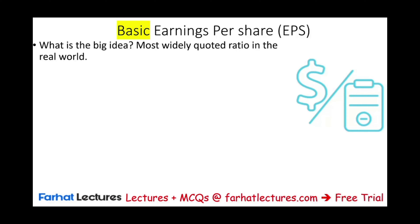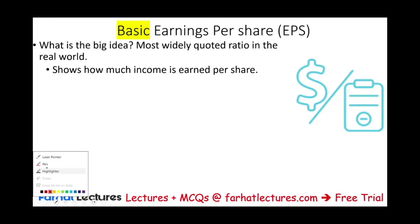If you watch CNBC, Bloomberg TV, read the Wall Street Journal, follow Wall Street activities, that's the most quoted ratio. Why? It shows how much income is earned for one individual stock. And when you own stocks, you want to know how much you are earning for that stock. And this is what it shows you.